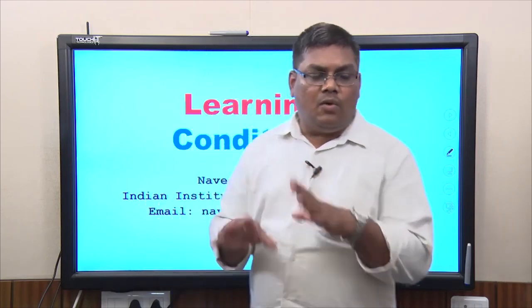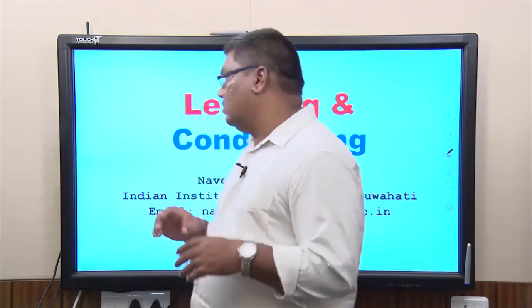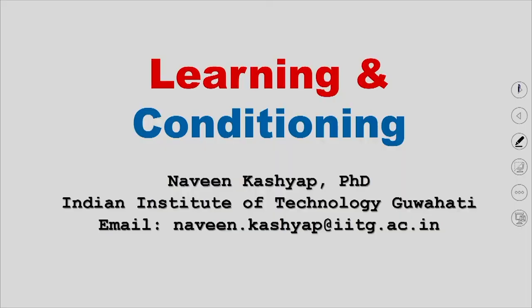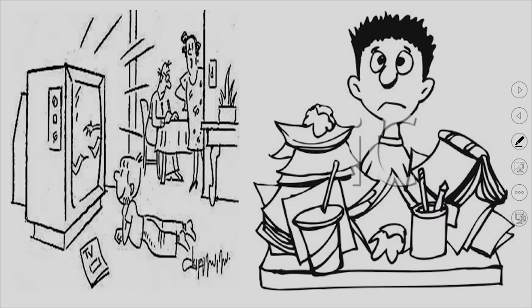Let us understand what learning and conditioning are and how it all works. This cartoon briefly describes what learning is about: a father is doing the child's homework because each time he stops, the child cries — the child has learned that throwing a tantrum makes the father do the work. On the other side, a person is trying to learn how to manage his books using rewards — a drinking reward and an eating reward.